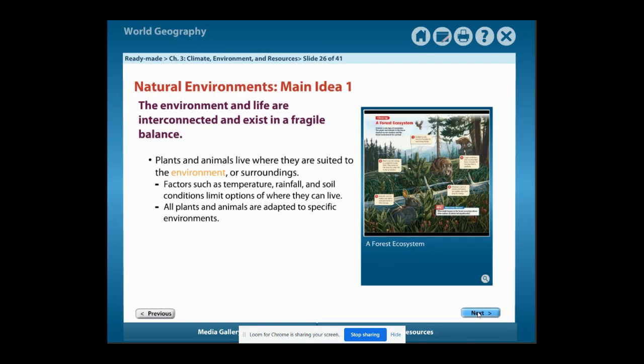Natural Environments, Main Idea Number 1: The environment and life are interconnected and exist in a fragile balance. Plants and animals live where they are suited to the environment or surroundings. Factors such as temperature, rainfall, and soil conditions limit options of where they can live. All plants and animals are adapted to specific environments.